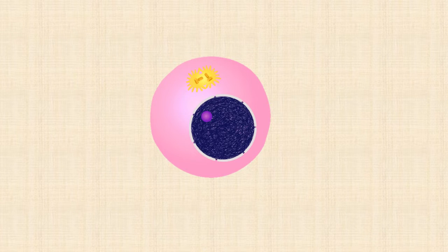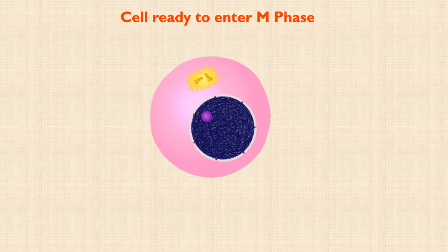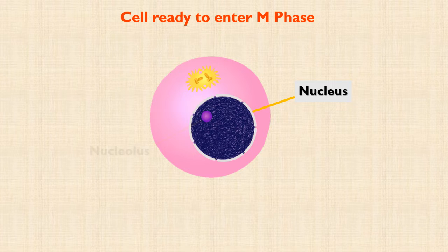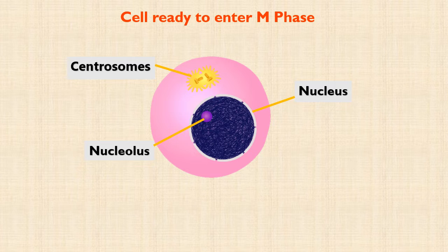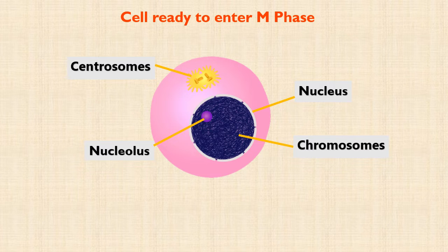Suppose this is our cell at the end of interphase. It is ready to enter the M phase. The nucleus and nuclear envelope are clearly visible, and one or more nucleoli are also visible. The two centrosomes are present at one side of the nucleus. Recall that these centrosomes will form the mitotic spindle for chromosomal sorting later in the process of nuclear division. As you can see in this cell, chromosomes cannot be seen individually because they are uncondensed. But remember, chromosomes have already duplicated during S phase of interphase.